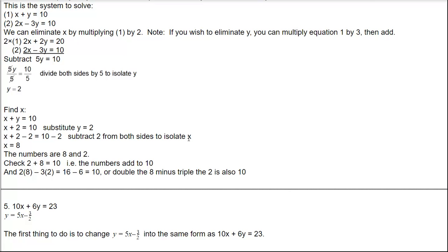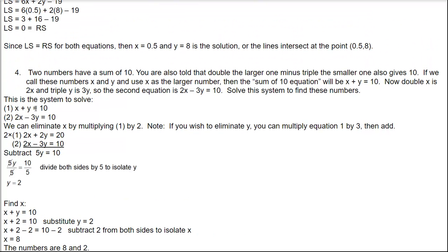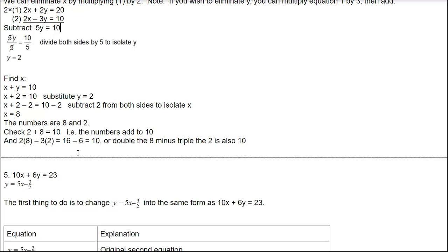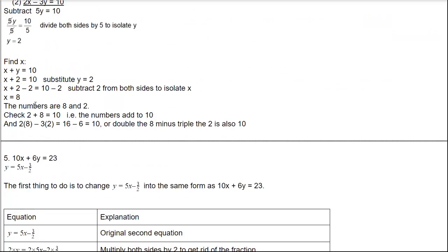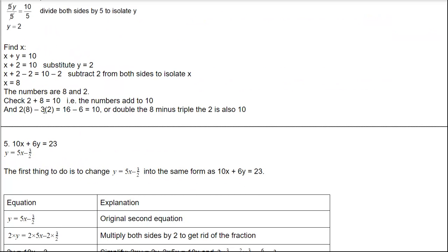Checking against the original question text: 8 and 2 do add to 10 — first condition satisfied. Double the larger (2 times 8 = 16) minus triple the smaller (3 times 2 = 6): 16 minus 6 equals 10 — second condition satisfied. Both conditions check out in the wording of the question.